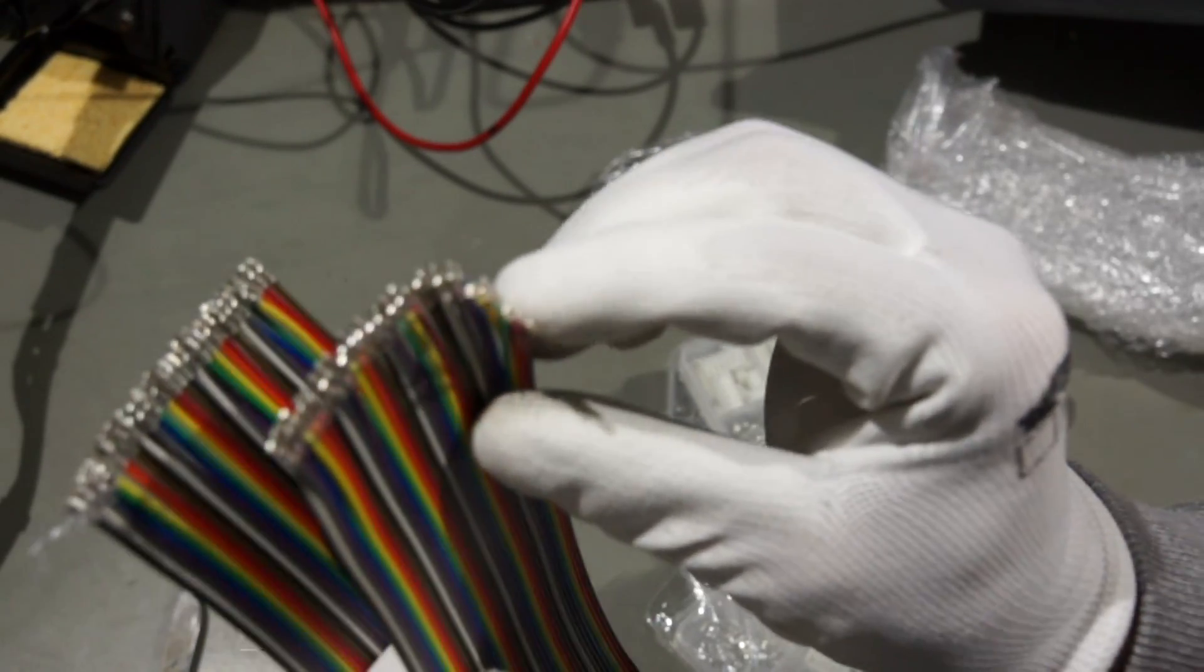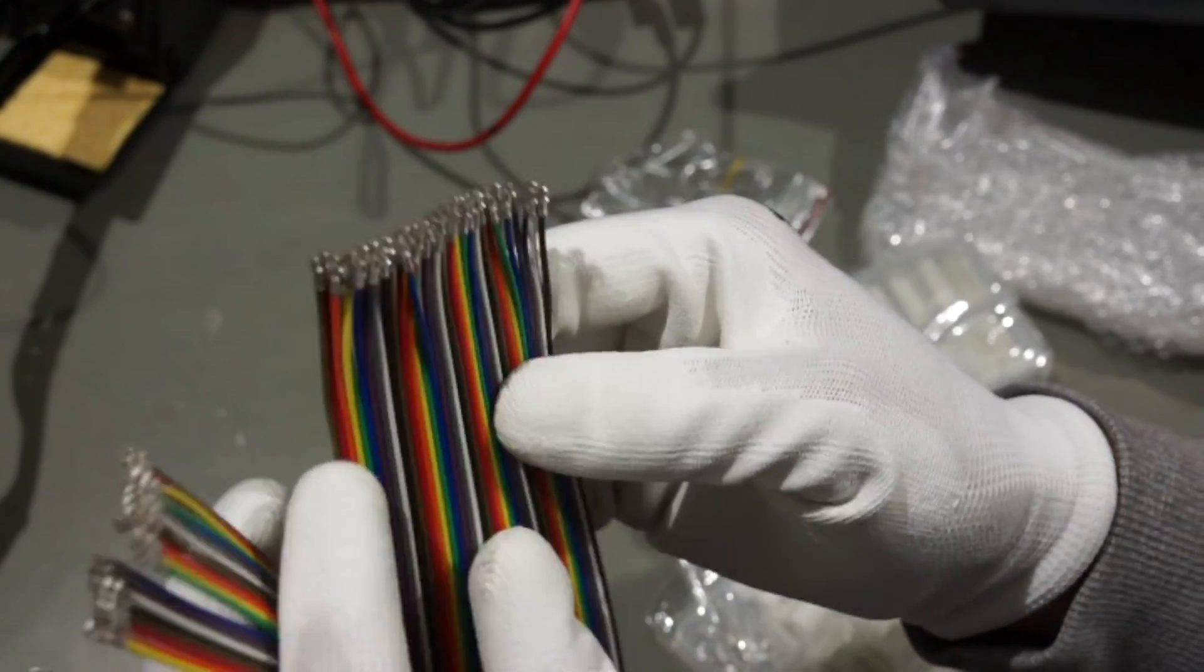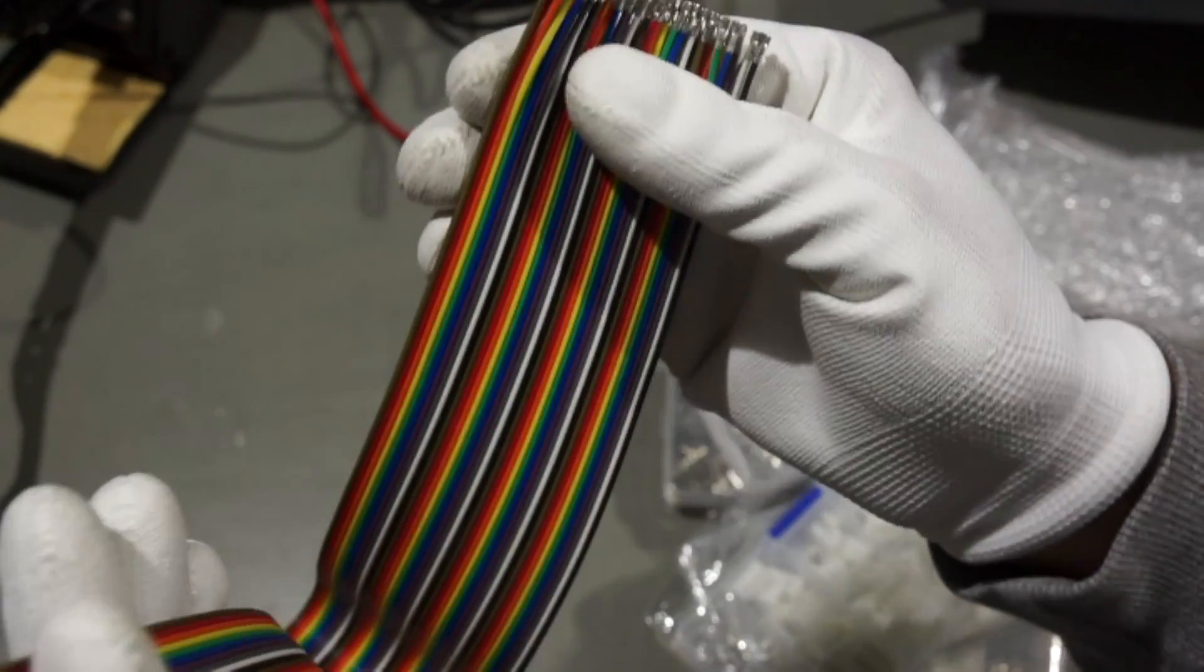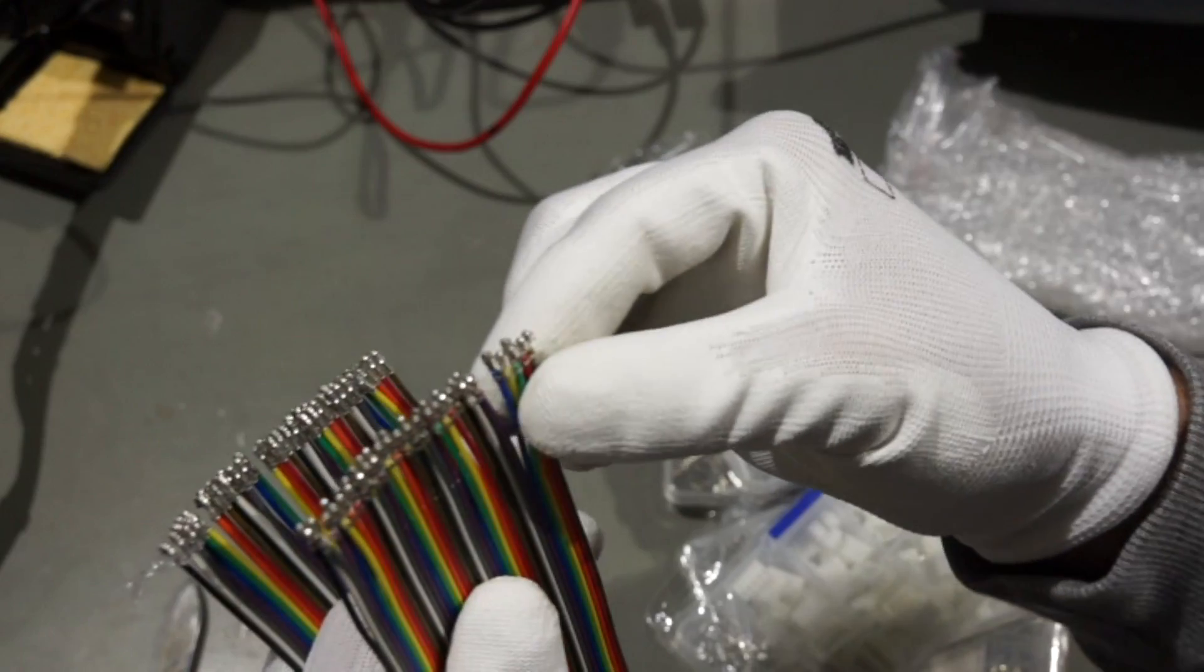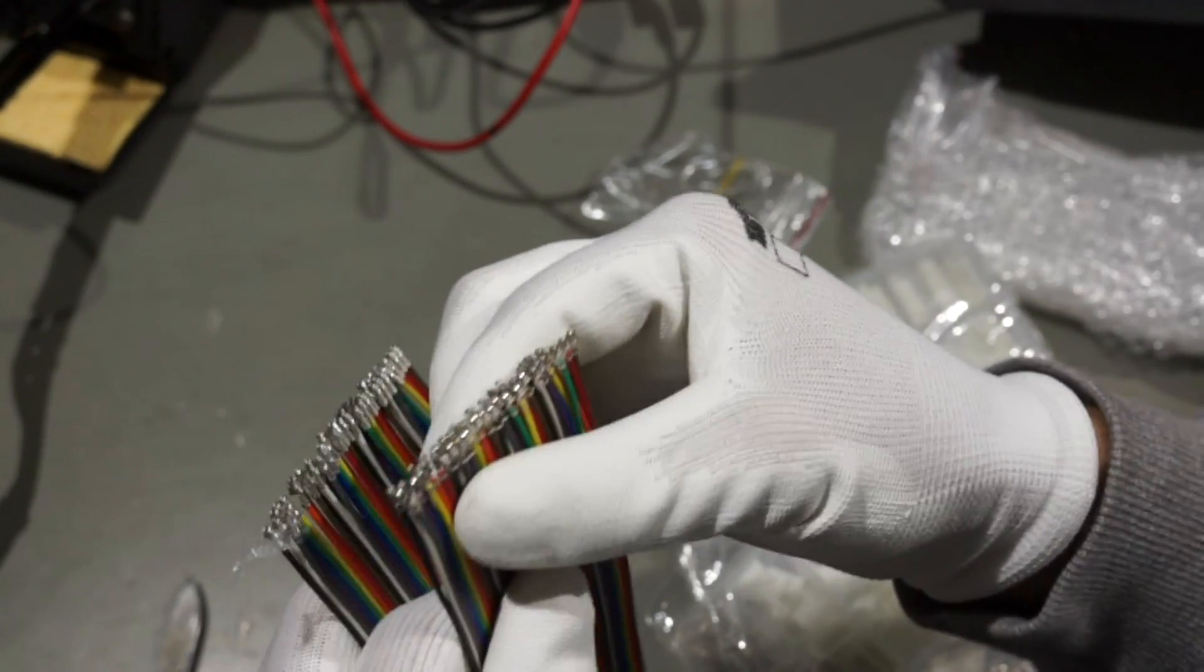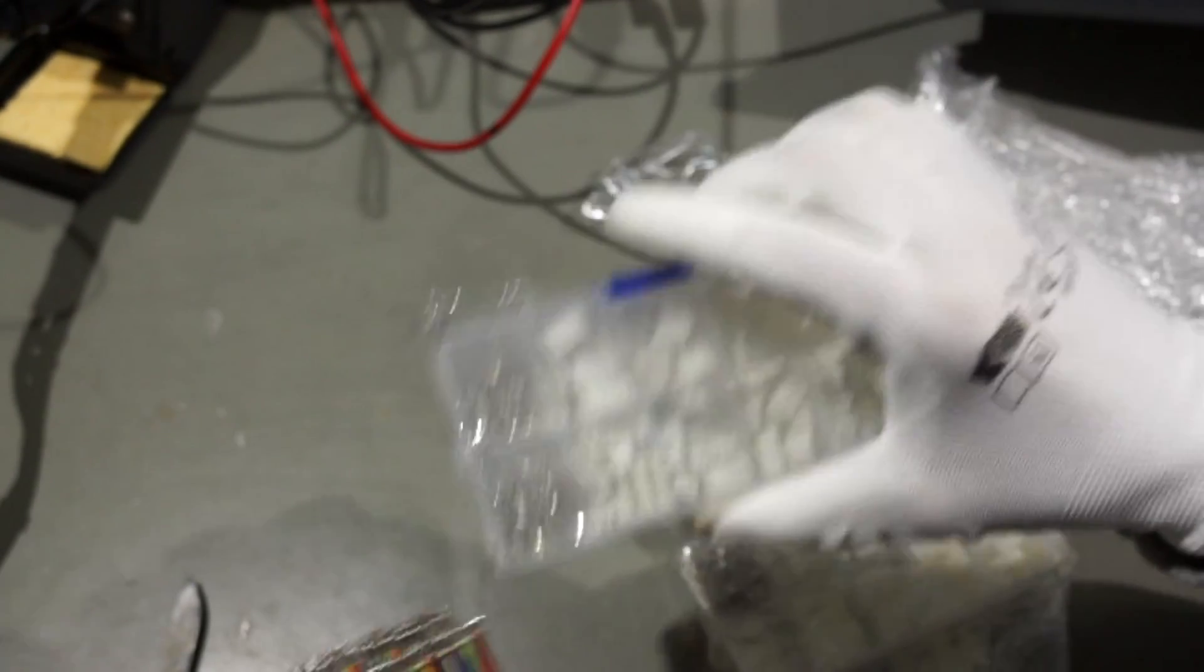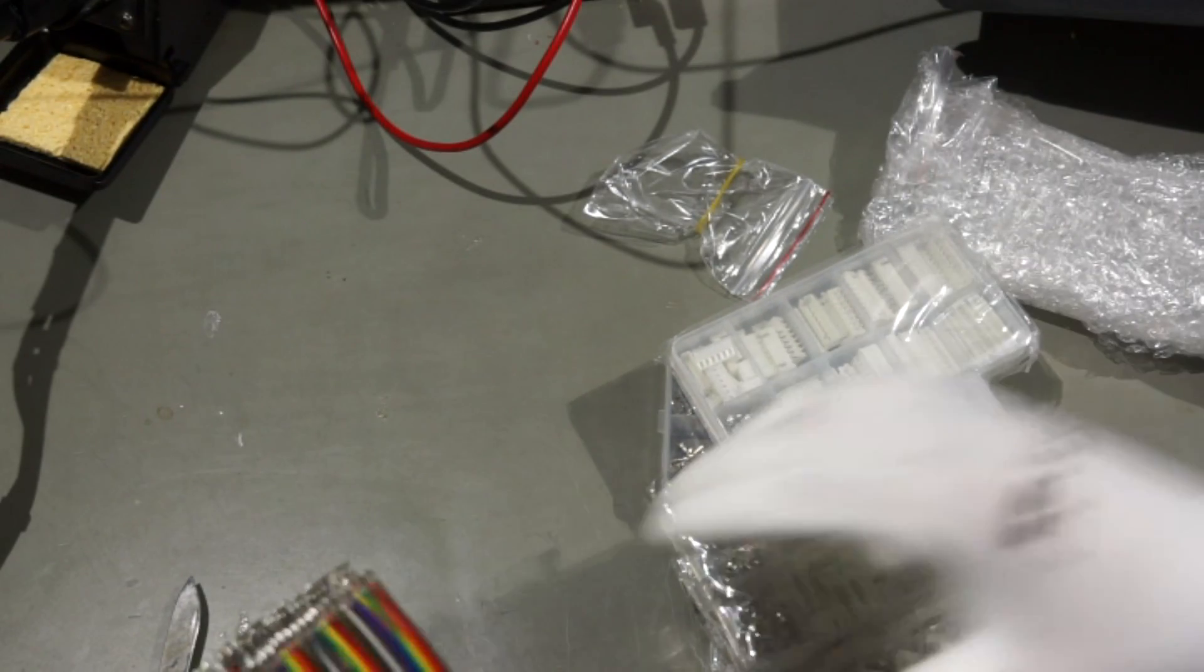These are prefabricated wires because it's much faster if you have those instead of crimping your own and I thought because they were quite cheap I thought I buy a few of them and then I just can plug it in to these housings.